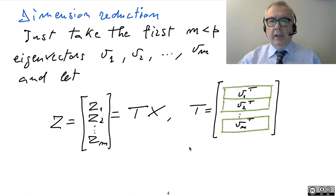Of course, you can perform a dimensional reduction at this point, because you will just take the first M eigenvectors with M less than P. And, in this case, the matrix T will be formed by the transposed eigenvectors, but you are not taking all of them.